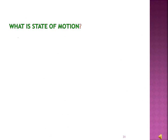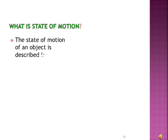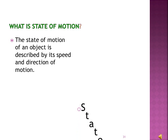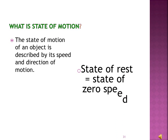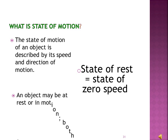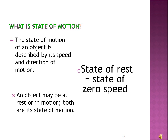What is the state of motion? The state of motion of an object is described by its speed and direction of motion. A state of rest means a state of zero speed. An object may be at rest or in motion — both are states of motion. Only if we know the speed and direction of motion can the state of motion be described.